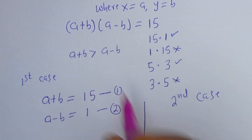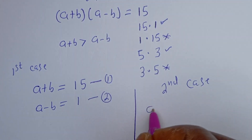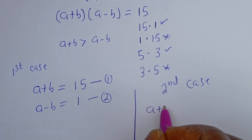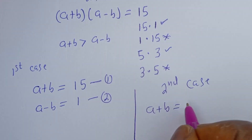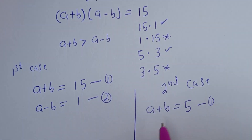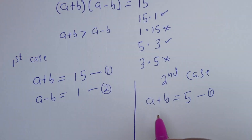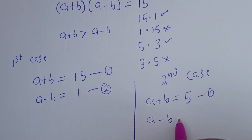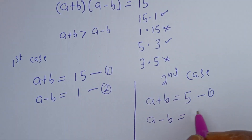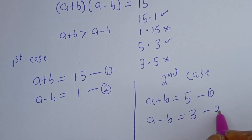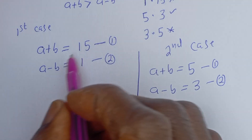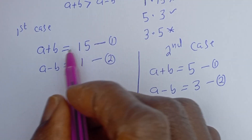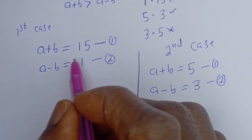From the second case: a + b = 5 — let's call this equation 1. Then a - b = 3 — let's call this equation 2. This is a simultaneous equation which can be solved using the elimination method.